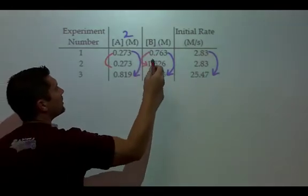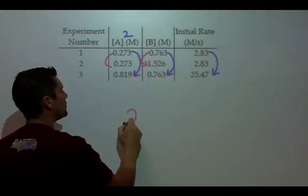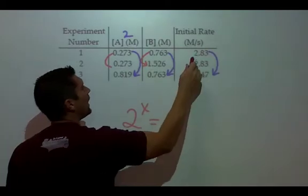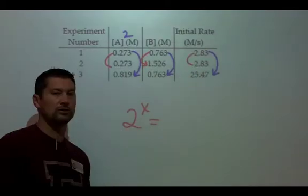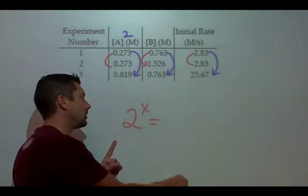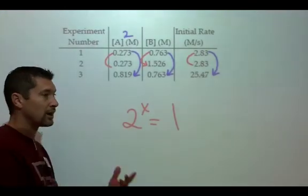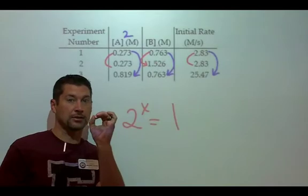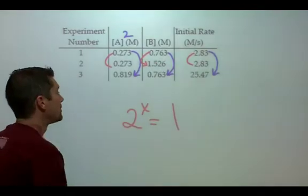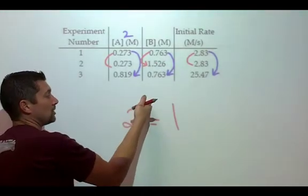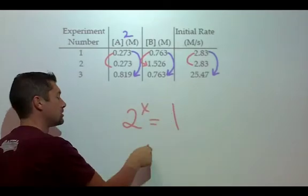What happens to B? B doubles. And notice that the rate is multiplied by a factor of 1, or what I like to say, absolutely nothing happened. So anything to the what order is 1? 0 order.